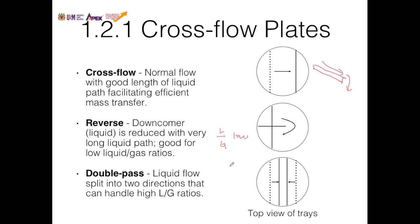The reverse flow configuration is good for low L/G ratios — meaning a lower amount of solvent compared to gas. For high L/G ratios, there is a higher amount of solvent compared to gas. L stands for liquid and G stands for gas; these are flow rates and as a ratio they are dimensionless. For the double pass configuration, the liquid flows split into two directions, meeting at the middle and coming down as the downcomer. This configuration handles high liquid flow rates compared to lower gas flow rates.